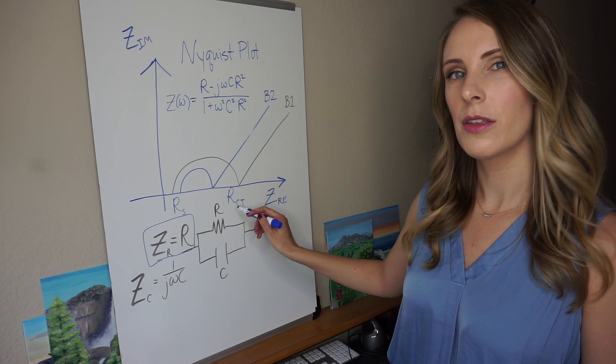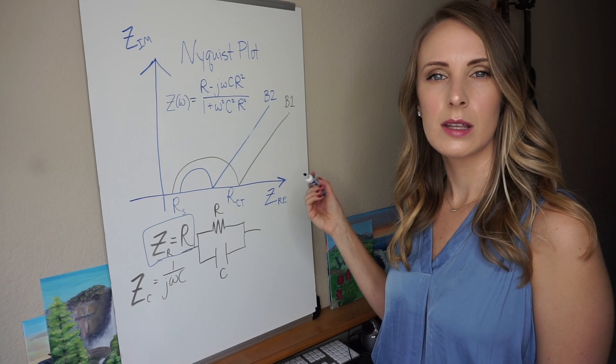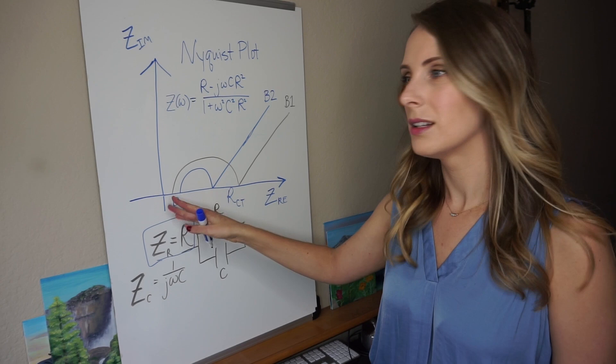So that's why they call this the charge transfer resistance. And this point particularly denotes things like electrochemical reactions in the electrodes.